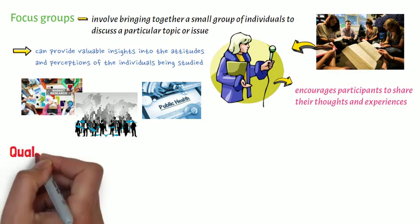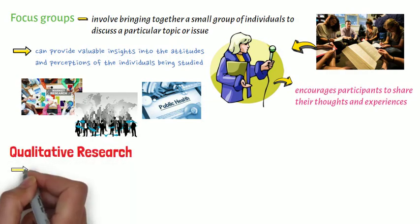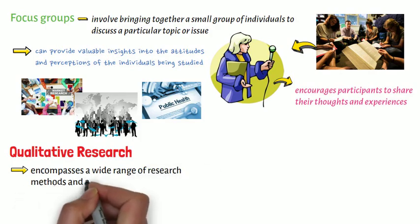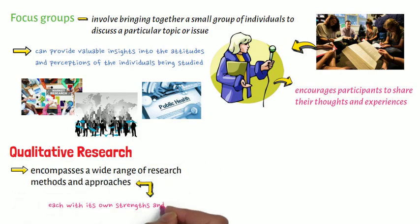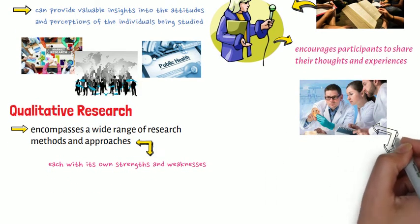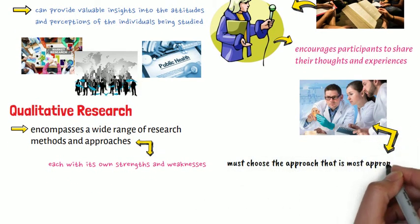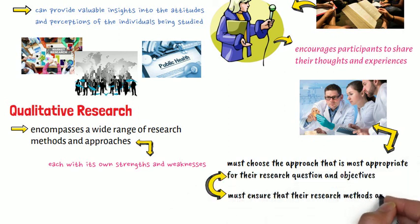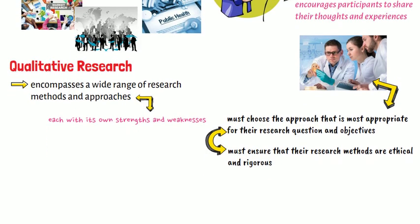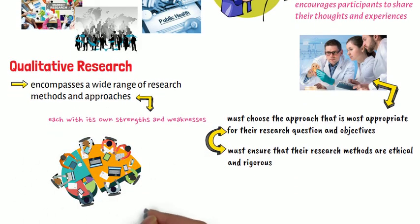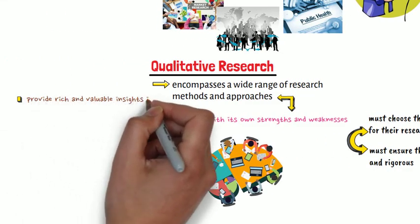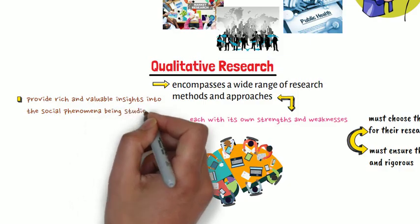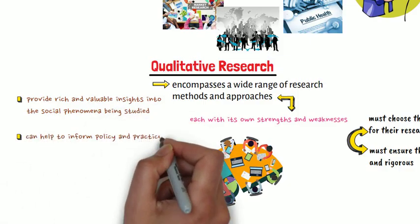In conclusion, qualitative research encompasses a wide range of research methods and approaches, each with its own strengths and weaknesses. Researchers must choose the approach that is most appropriate for their research question and objectives, and must ensure that their research methods are ethical and rigorous. With careful planning and execution, qualitative research can provide rich and valuable insights into the social phenomena being studied, and can help to inform policy and practice in a range of fields.